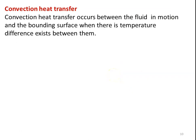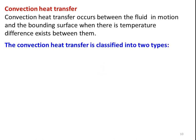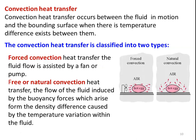The next mode of heat transfer is convection. Convection is the heat transfer that occurs between a fluid in motion and a bounding surface when there is a temperature difference between them. Convection heat transfer is classified into two types: forced convection and free convection. In forced convection, hot tea is cooled by air which is forced by a fan — there is heat transfer between the outer surface and the air flowing over it. The fluid is forced by a mechanical device, so it is called forced convection.